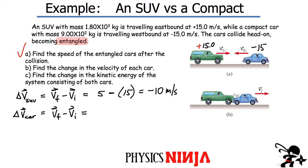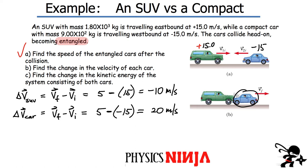For the compact car: after the collision it's moving at positive 5 m/s (to the right), and its initial velocity was negative 15 m/s (moving to the left). So delta V = 5 minus (negative 15) = positive 20 meters per second. The car's change of velocity is larger — it slowed down and switched directions. The total change was 20 m/s in the direction pointing to the right.